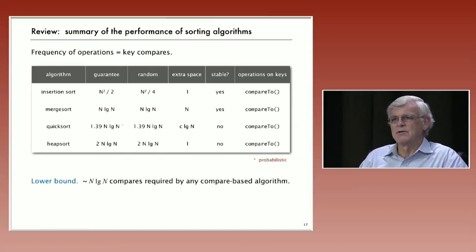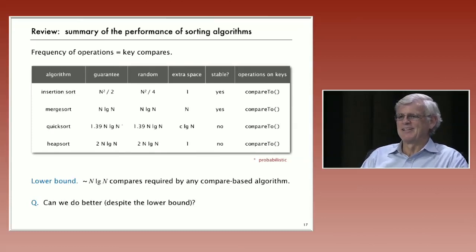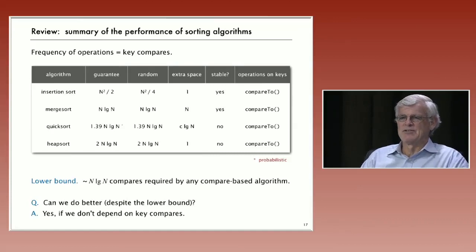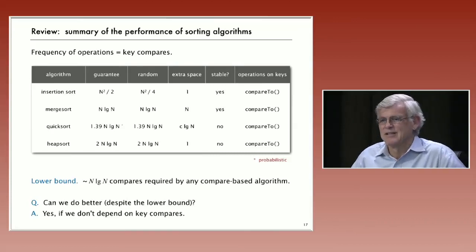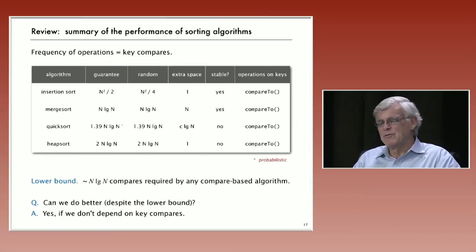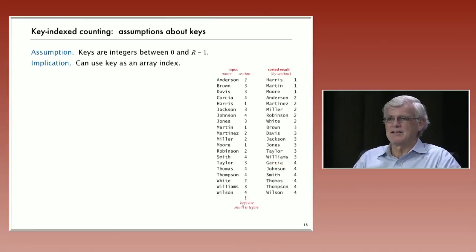So why do we consider other sorting algorithms? There's a lower bound. Why are we thinking about this? The question is can we do better? And obviously we're here because the answer is that we can do better if we don't depend on compares. The lower bound, the one assumption made is that we use compares. But we don't always need to use compares. So let's look at an example. Key indexed counting is a fine example of that.